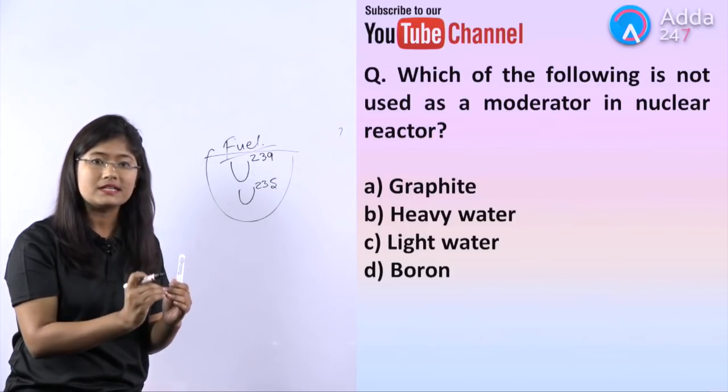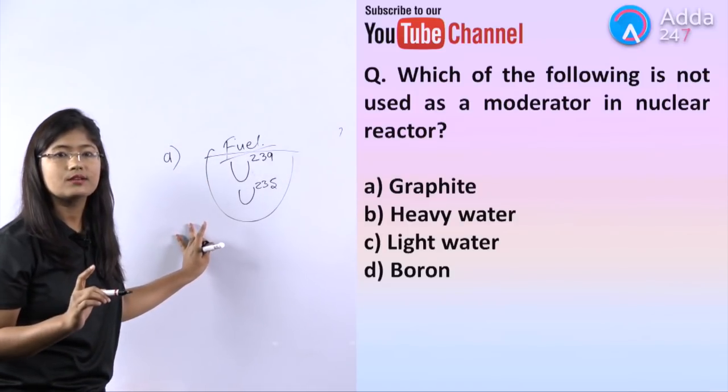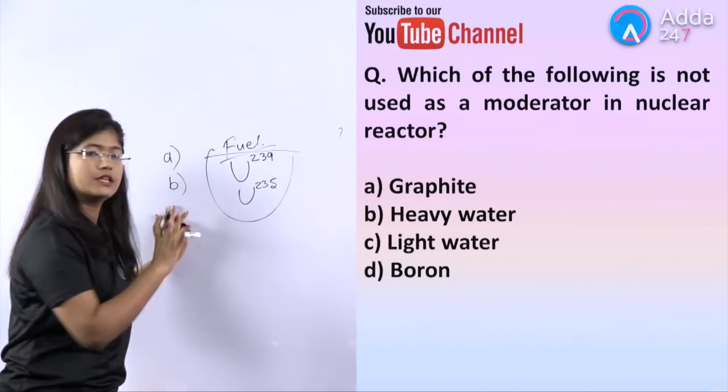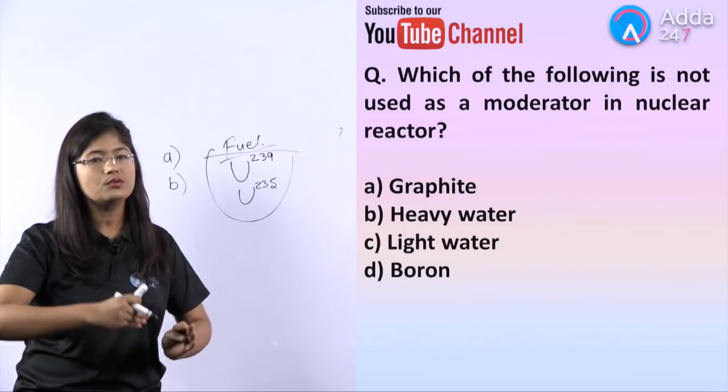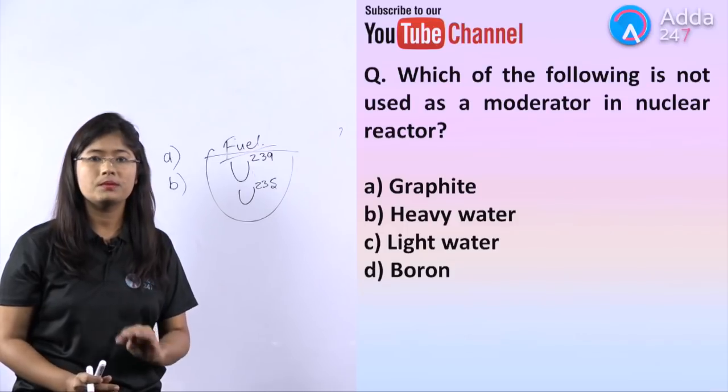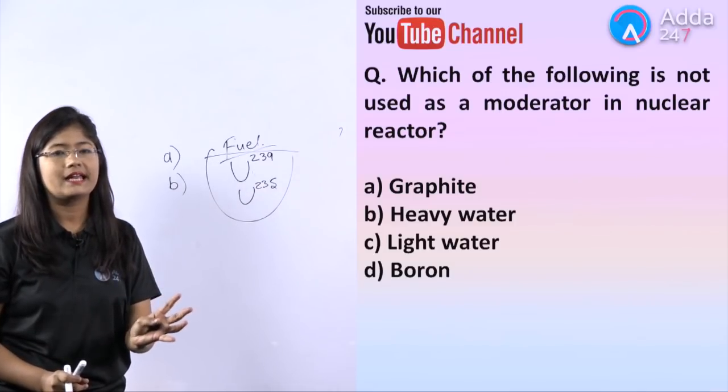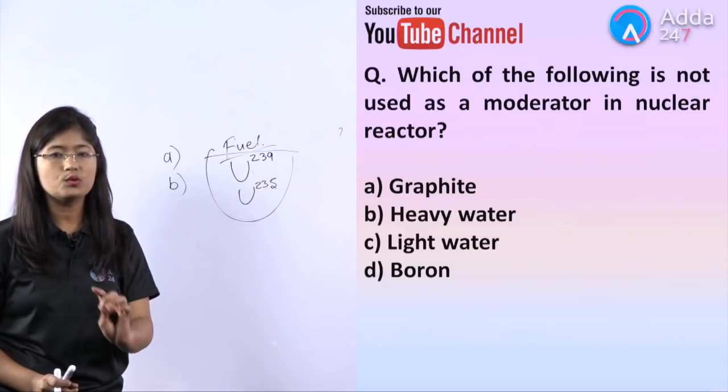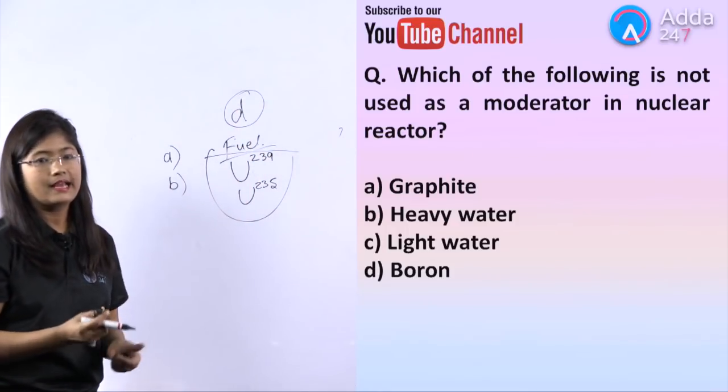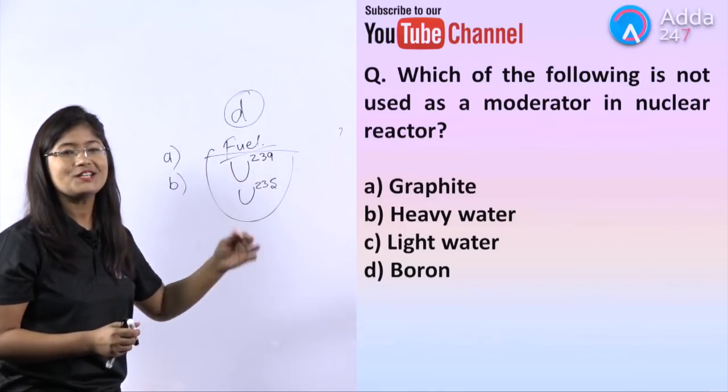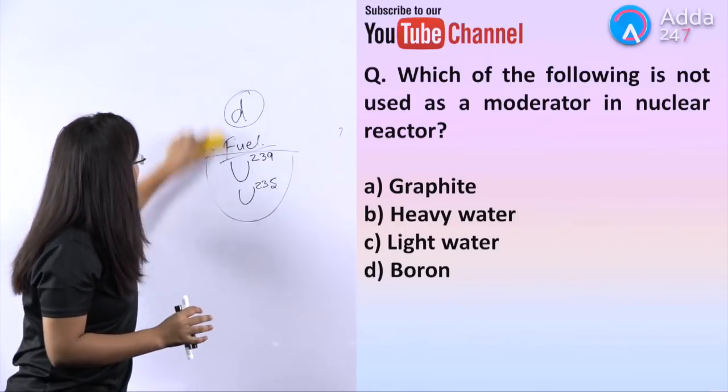For moderating, you can use graphite given in option A. You can use heavy water given in B. In many standard books you'll see only this, but in absence of heavy water, you can use light water as well, though results are optimum in heavy water. So A, B, C are eliminated and boron remains. Boron will not be used as a moderator. The answer is option D. Further, you will have control rods in which boron and cadmium are used.